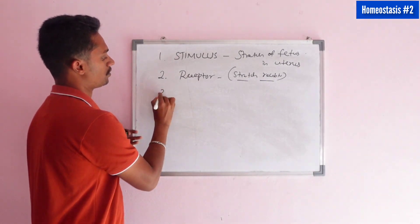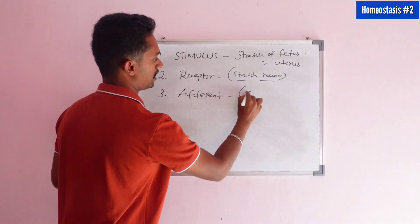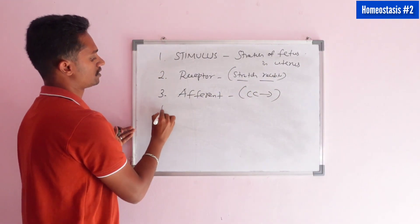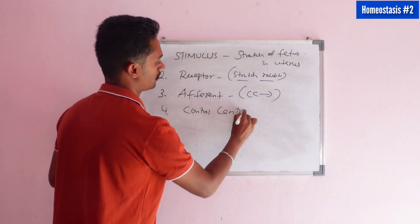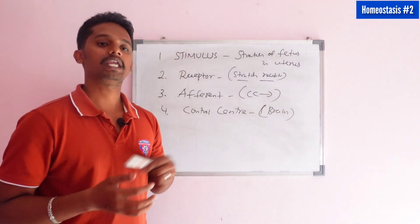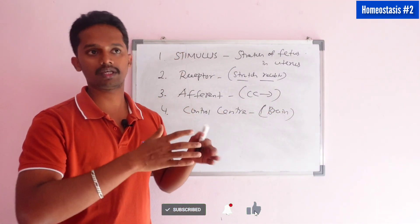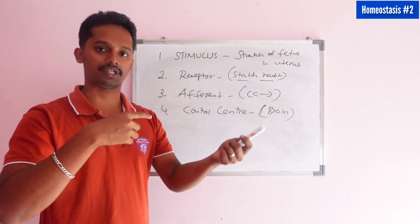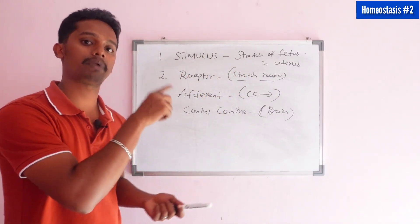After the stretch receptor is activated, the message passes via the afferent nerve to the brain, which is the control center. The control center detects that the cervix is already stretching. The brain's response is to increase the stretching further — which is in the same direction as the stimulus, not opposite.